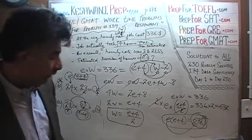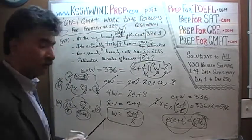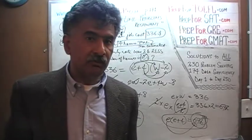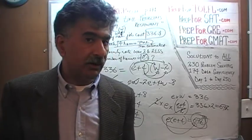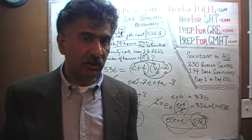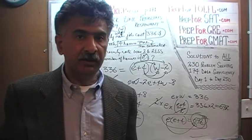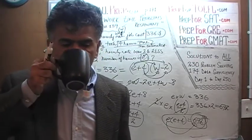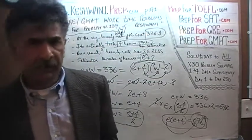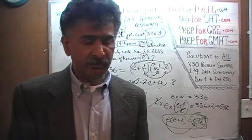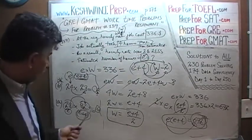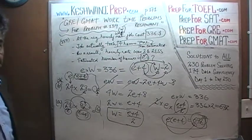The answer to this question is B. The estimated number of hours was 24. He had estimated it would take him 24 hours to finish the job. It ended up taking him 28 hours. And as a result, he made $2 less per hour than he had anticipated. Now, if you want to verify this, it is actually very easy and only takes a second.